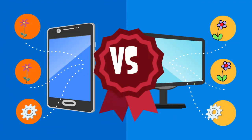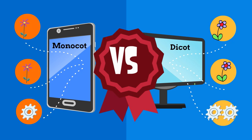There are two major types of angiosperms. A monocot, which has 1 cotyledon — the seed leaf that provides food for the embryo — and a dicot, which has 2 cotyledons. Let's take a look at some of the major traits of monocots and dicots.